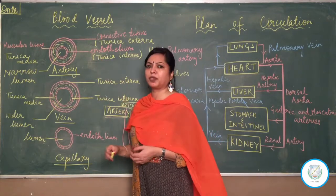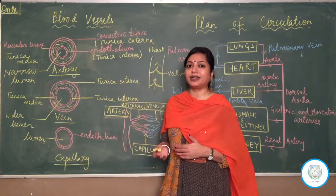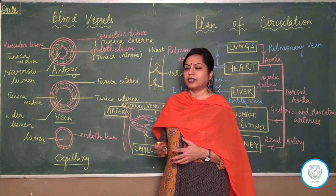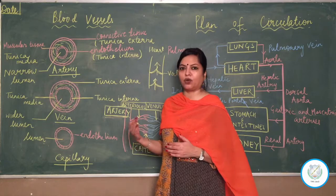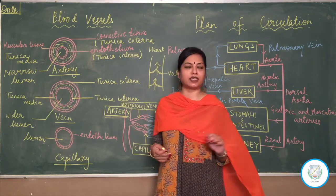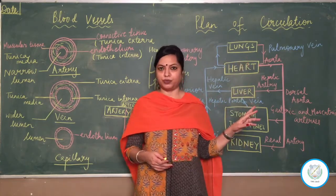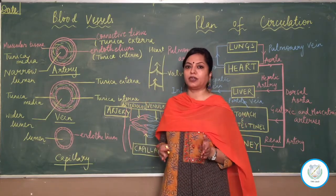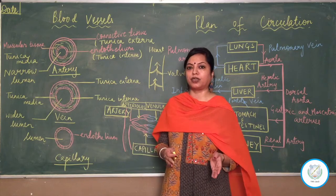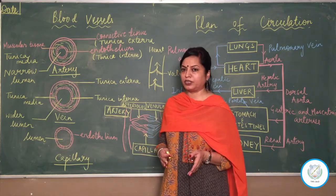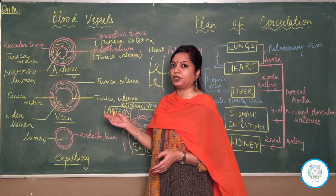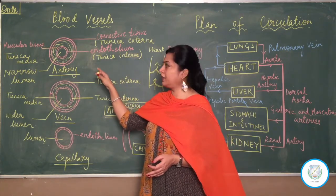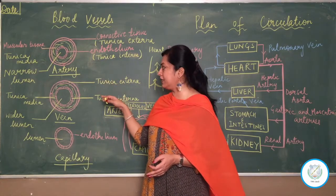Differences between artery and vein are usually criteria-based. You may be asked the type of blood they carry — oxygenated or deoxygenated — along with the exceptions. You may be asked the direction of flow: away from heart towards the organ, or away from organ towards the heart. Structural differences include three points: the lumen, the thickness of the walls, and the presence or absence of valves.